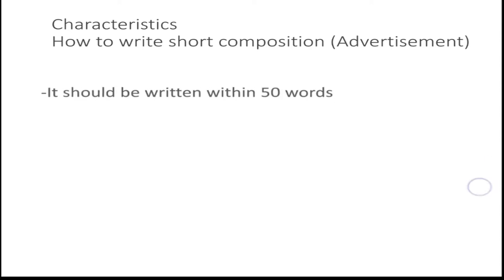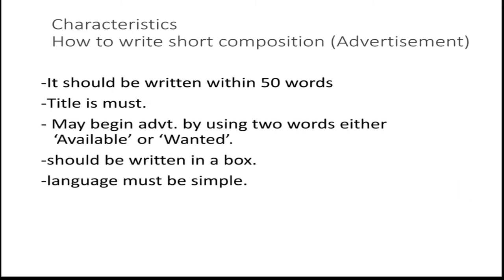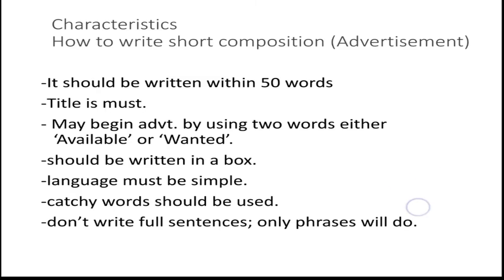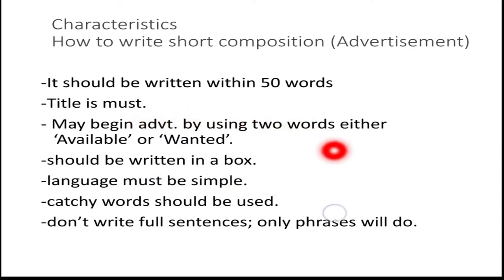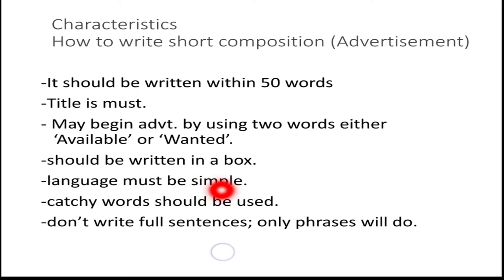Now we come to the characteristics of advertisements. The first characteristic is it should be written within 50 words — that is why the name 'short composition' is given, because they are written in less than 50 words. Title is a must; this title carries one mark. The advertisement should be written in a box — that is a must. All short compositions are enclosed in a box after writing.